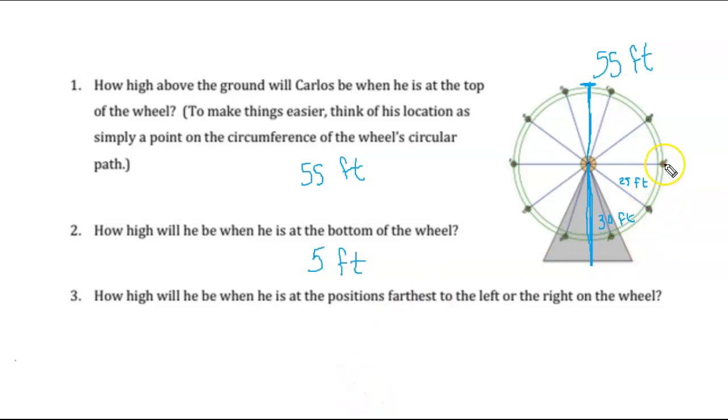And then when we go the furthest to the left and the furthest to the right, that's exactly even with the middle of the Ferris wheel, and we have already determined that was at 30 feet. So we can use that information about the circle. We know the highest we're going to go is 55 feet, the lowest is 5 feet, and when we're at the middle we're at 30 feet. Pretty much everything between 5 feet and 55 feet, we're just going to keep going in a circle and bouncing between 5 feet and 55 feet.